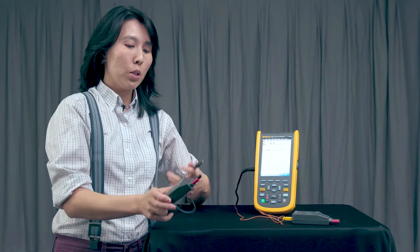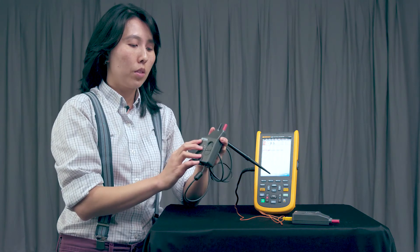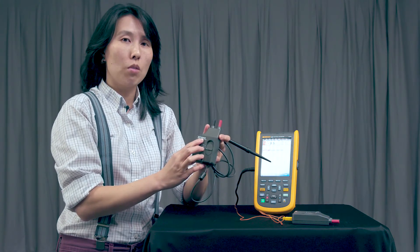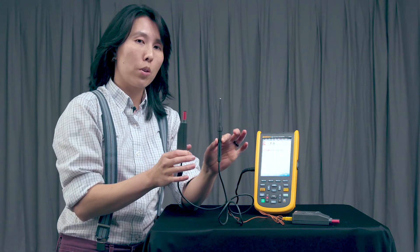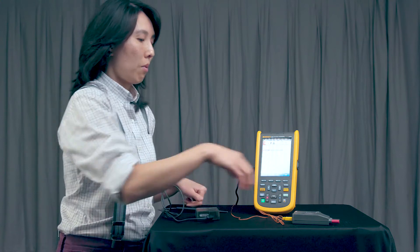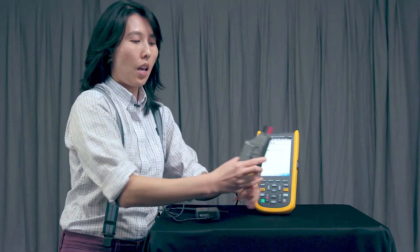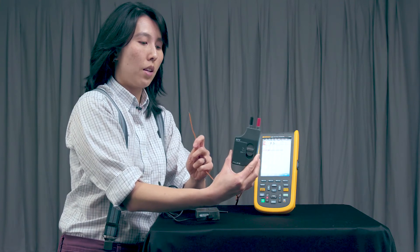For our temperature demonstration, we have two different modules here that are available. This is the ADT150UA. It has the temperature, the probe portion attached to it. And similarly, we have the ADTK, which actually has a thermocouple connected to the end of it.